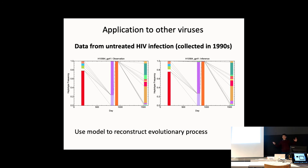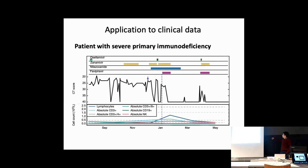We can also model HIV, adding recombination as another evolutionary process alongside mutation and selection. Using data from untreated HIV infection from the 1990s in Uganda, and the same likelihood framework, we can reconstruct patterns of HIV evolution within a person.